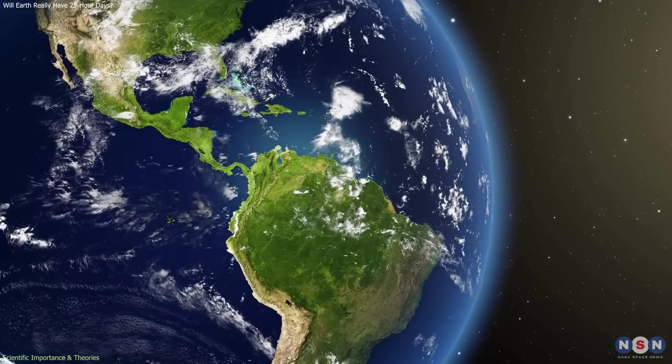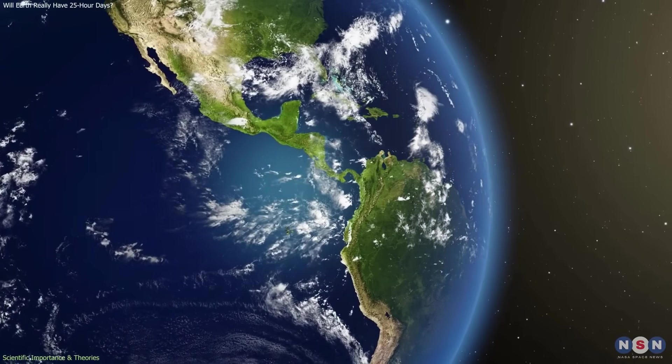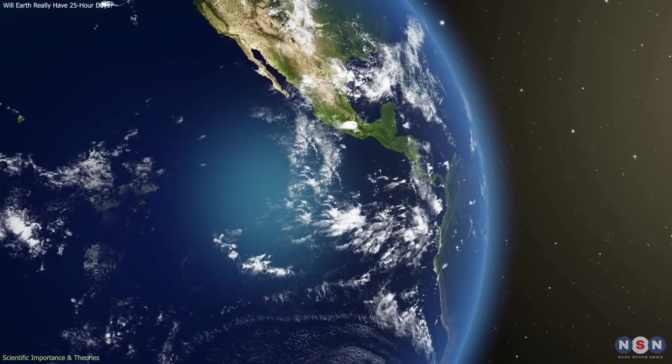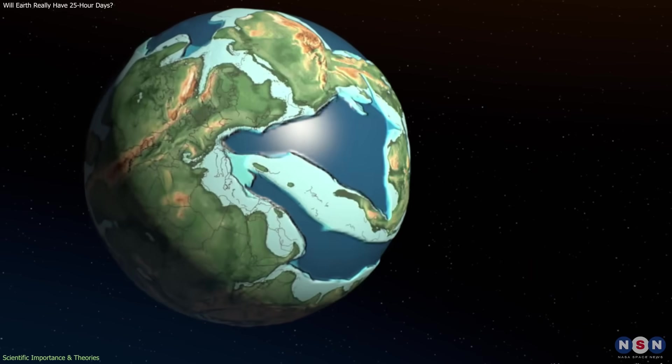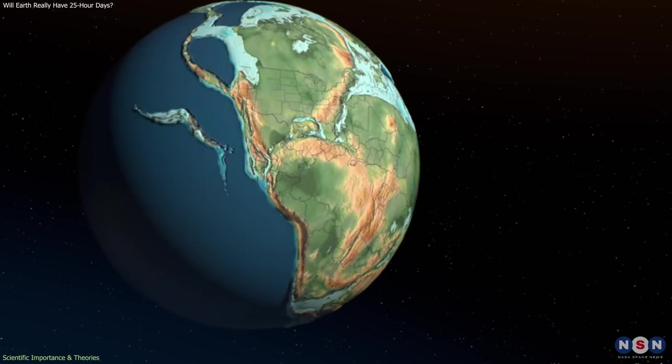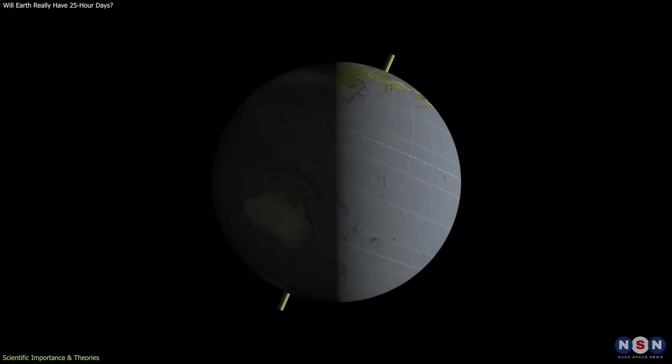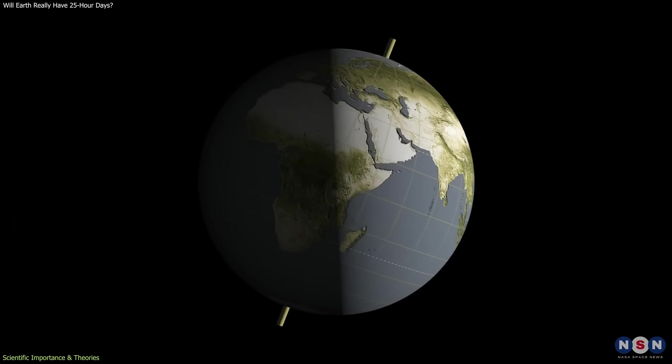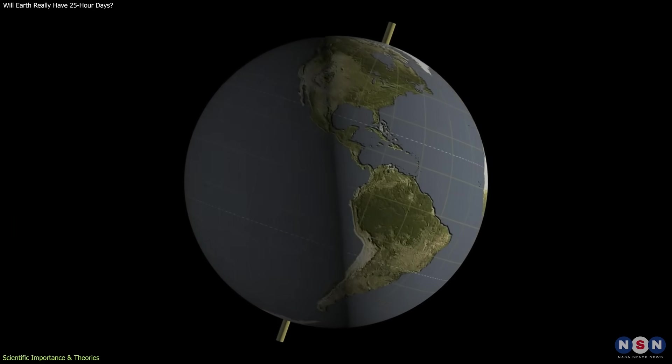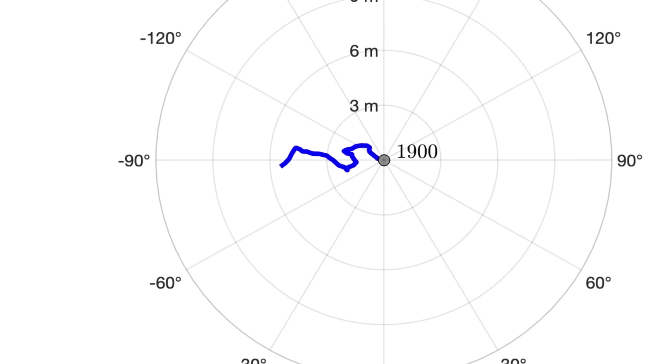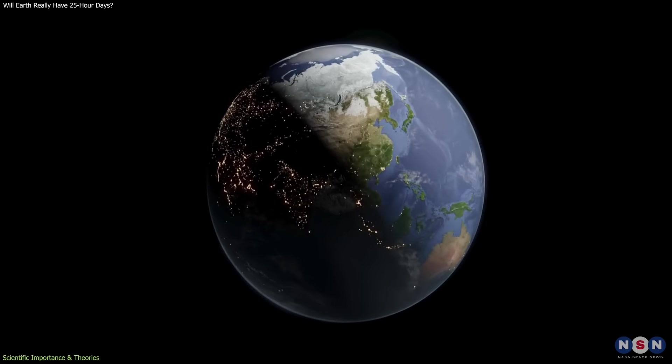Earth's rotation is also influenced by how mass is distributed within and on the surface of the planet. Earth is not a rigid object. Its atmosphere, oceans, mantle, and liquid outer core are all in motion. When mass moves closer to Earth's axis of rotation, the planet spins slightly faster. When mass moves farther away, it spins slightly slower. This is the same principle that allows a spinning figure skater to control their rotation speed.